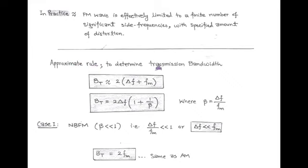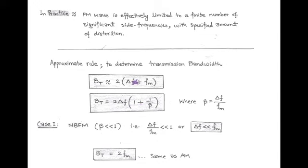According to this rule, transmission bandwidth is equal to twice of (ΔF + FM). Here ΔF is called frequency deviation and FM is called modulating frequency. Now, we take ΔF common and we get transmission bandwidth equals to 2·ΔF·(1 + FM/ΔF).